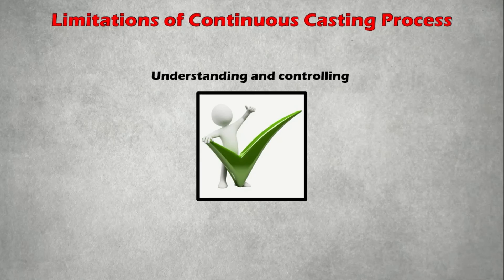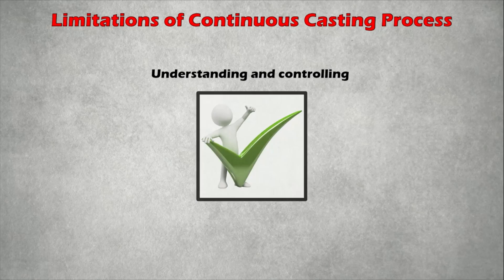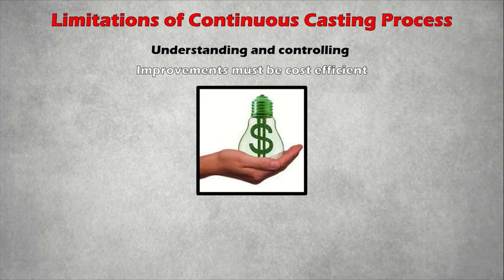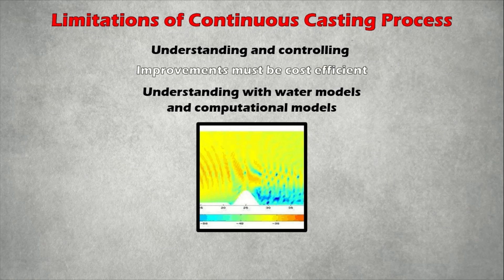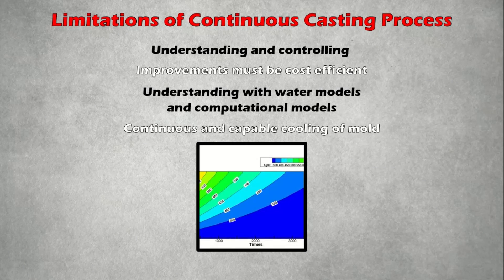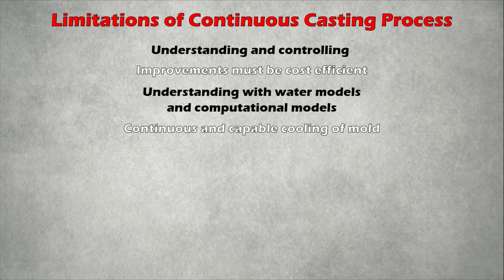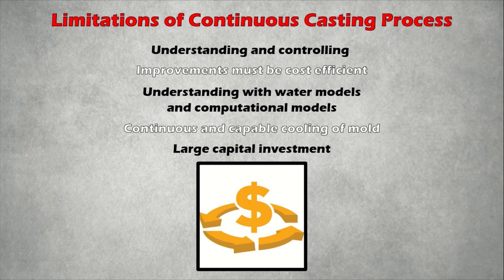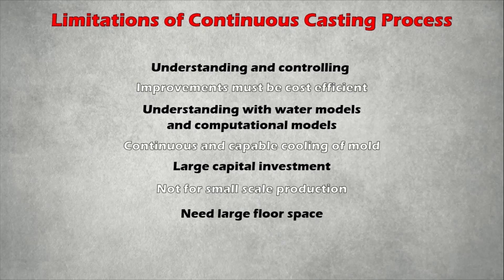Limitations of the continuous casting process: Understanding and controlling the casting process is important, as it may introduce defects that persist into the final product even after many later processing steps. Improvements must be cost-efficient, owing to economic pressure from the general oversupply of primary metals. Understanding comes from physical water models and advanced computational models, in addition to expensive plant experiments. Other limitations include the requirement for continuous and capable mold cooling, large capital investment, unsuitability for small-scale production, and the need for large ground space.